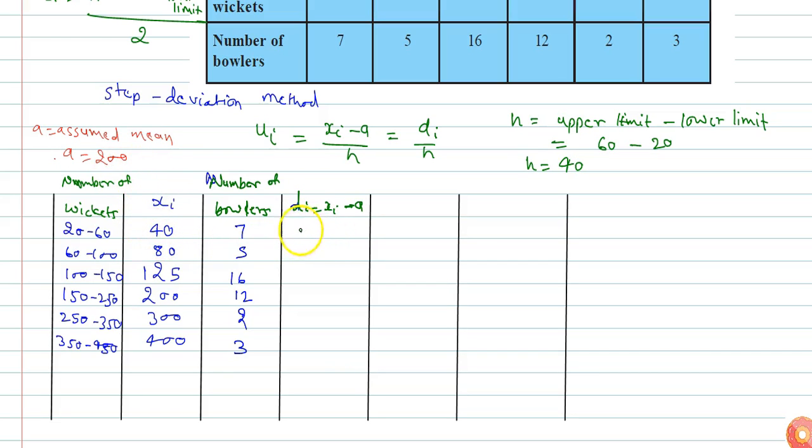So 40 minus 200 equals minus 160, 80 minus 200 equals minus 120, 125 minus 200 equals minus 75.